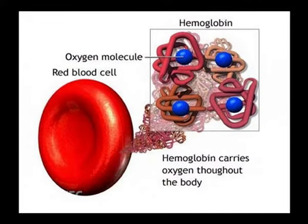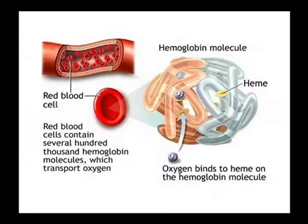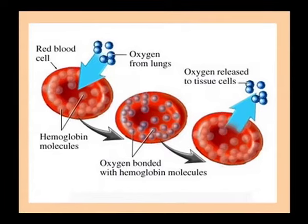Hemoglobin is the iron-containing oxygen transport metalloprotein in the red blood cells of vertebrates. Hemoglobin in the blood carries oxygen from the respiratory organs like lungs or gills to the rest of the body, where it releases the oxygen to burn nutrients, to provide energy, and to power the functions of the organism. It also collects the resultant carbon dioxide to bring it back to the respiratory organs to be dispensed from the organism.